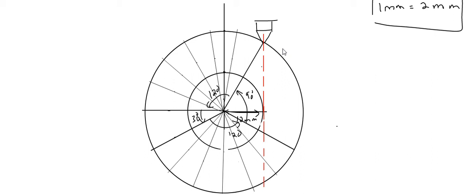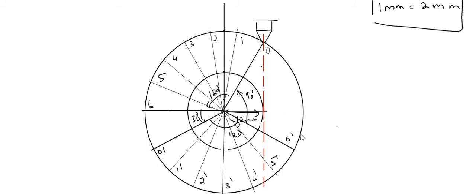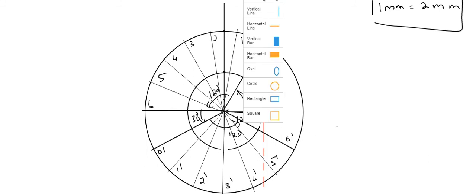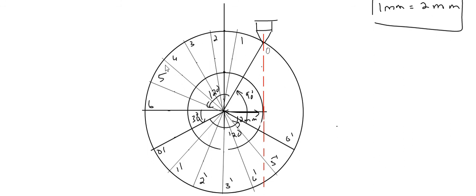Now we have to name the points as we did in the displacement diagram: 0, 1, 2, 3, 4, 5, 6, then 0 dash, 1 dash, 2 dash, 3 dash, 4 dash, 5 dash, 6 dash. In the offset cam profile diagram, what you have to do is draw the tangents from points 1, 2, 3, 4, and so on to the offset circle.